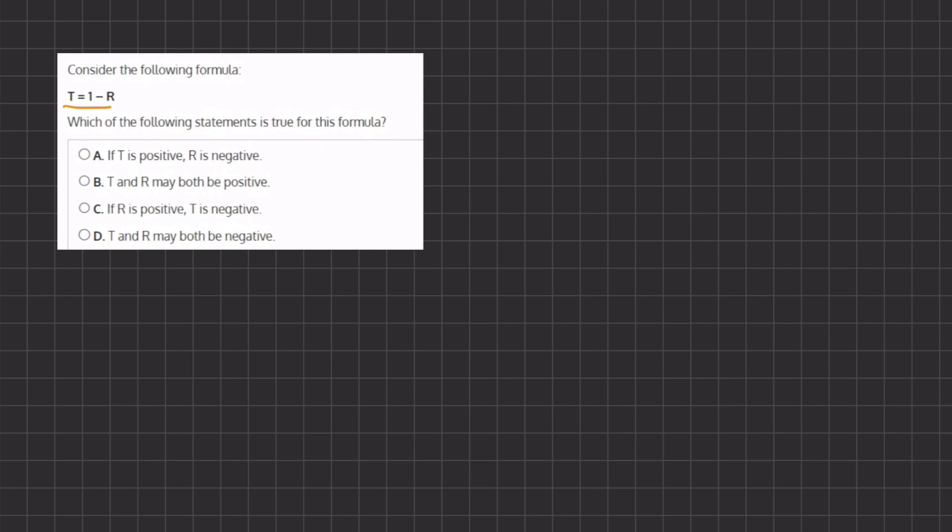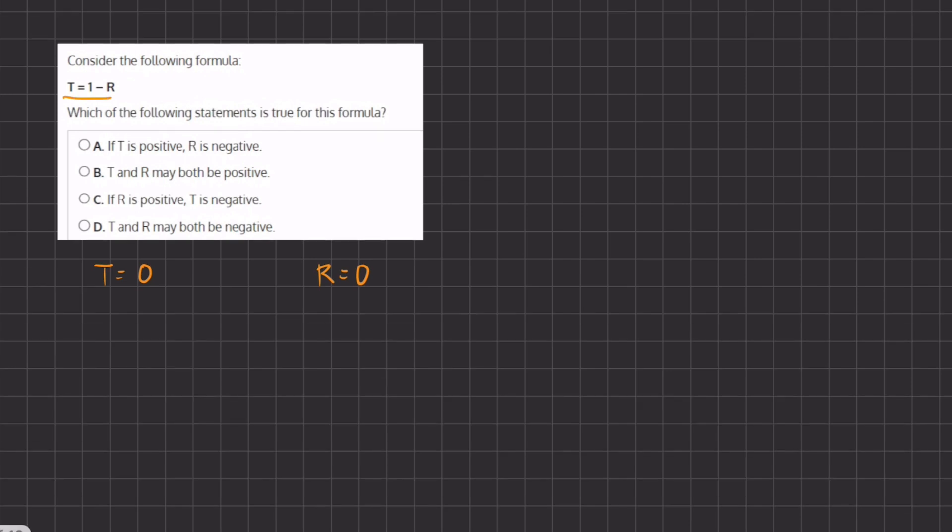The first step in graphing is to find two points in order to plot and the two points we're going to find are the intercepts. We're going to set t equal to 0 and r equal to 0, two convenient points. When t equals 0, we have 0 equals 1 minus r and now we can add r to both sides in order to isolate it and we have r equals 1.